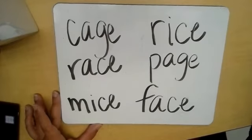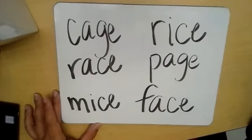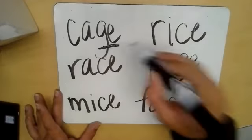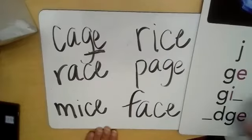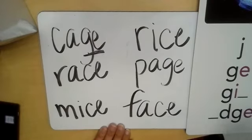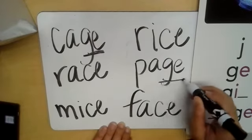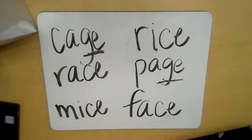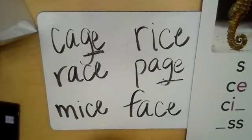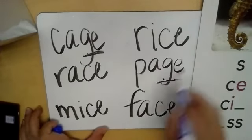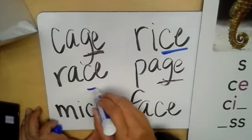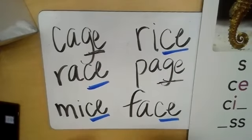Which one of these has that j sound? Yeah, we see that g-e that we learned about earlier, remember? So can we find any more with g-e or g-i? Yeah, here's one. All right, now let's look at this one with that soft c sound that makes the s. Any of these can y'all find? Yeah, we have c-e — look, all of these have that c-e sound that makes the s.